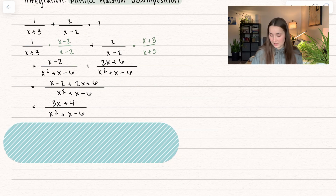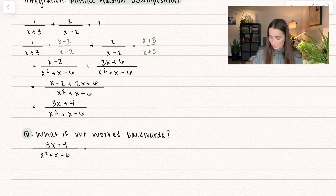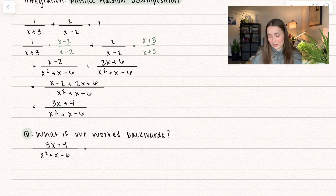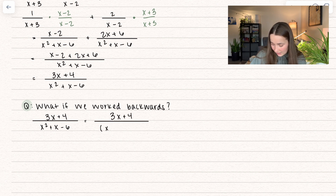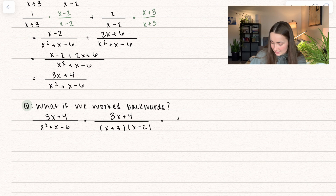Our question is: what if we wanted to work backwards? So if we're given (3x plus 4) divided by that whole denominator and want to break it into two separate fractions — let's work backwards. We already know how to factor the denominator, and that's always our first step. So I factor this into (x plus 3)(x minus 2).